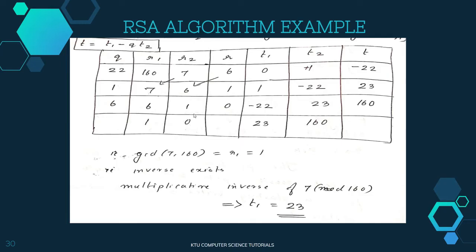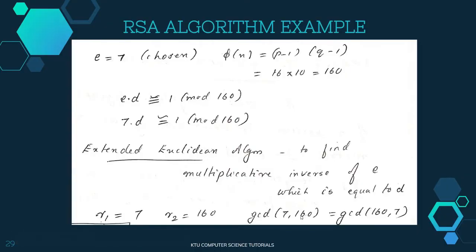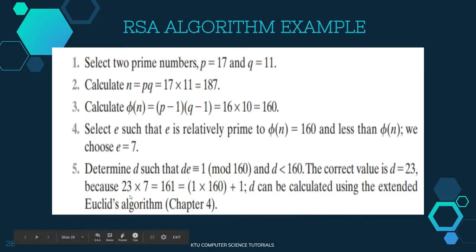Since GCD(7, 160) equals 1, the multiplicative inverse of 7 mod 160 is given by the T1 value, which is 23. We verify: 23 into 7 equals 161, and 161 mod 160 equals 1. So the correct value of d is equal to 23.